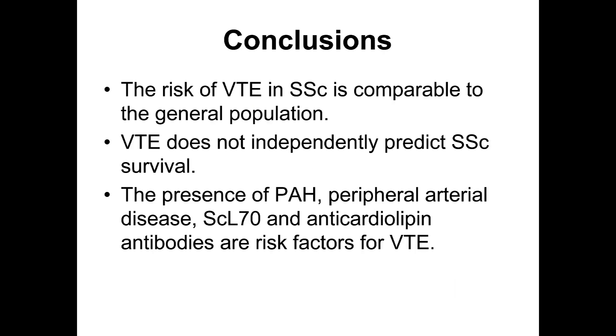In conclusion, we found that the risk of venous thromboembolic events in systemic sclerosis is comparable to the general population, and VTE is not independently associated with survival in systemic sclerosis. The presence of pulmonary hypertension, peripheral arterial disease, SCL70 antibodies, and anticardiolipin antibodies are risk factors for the development of venous thromboembolism. If you would like to read further about this body of work and our findings, I encourage you to please look at the journal's website for the full manuscript. Thank you.